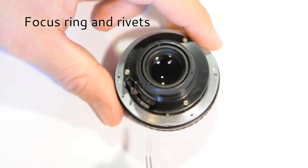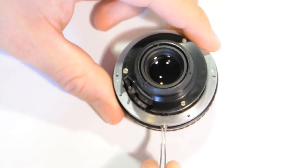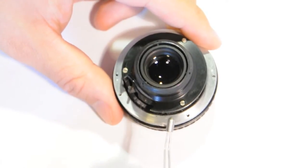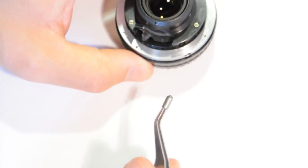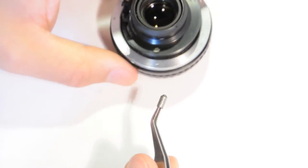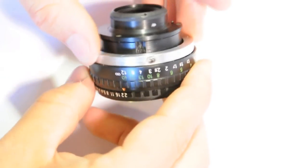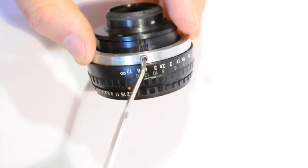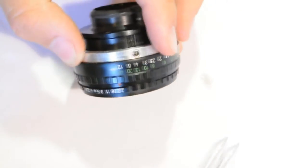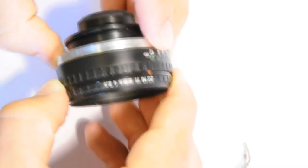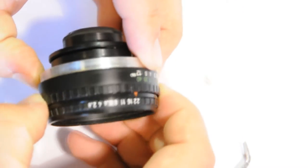There's this cylindrical thing which is the focus ring which has these small rivets. These two, when you focus, they will keep in place inside here and will enable the rotation of the front.